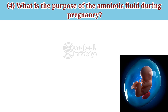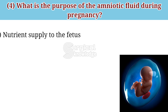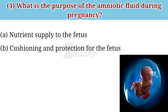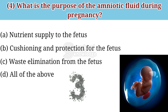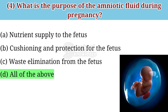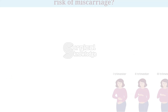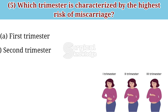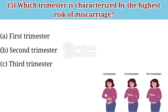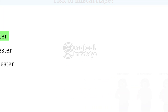What is the purpose of amniotic fluid during pregnancy? Options: nutrients supply to the fetus, cushioning and protection for the fetus, waste elimination from the fetus, all of the above. The correct answer is all of the above. Which trimester is characterized by the highest risk of miscarriage? Options: first trimester, second trimester, third trimester. The correct answer is first trimester.